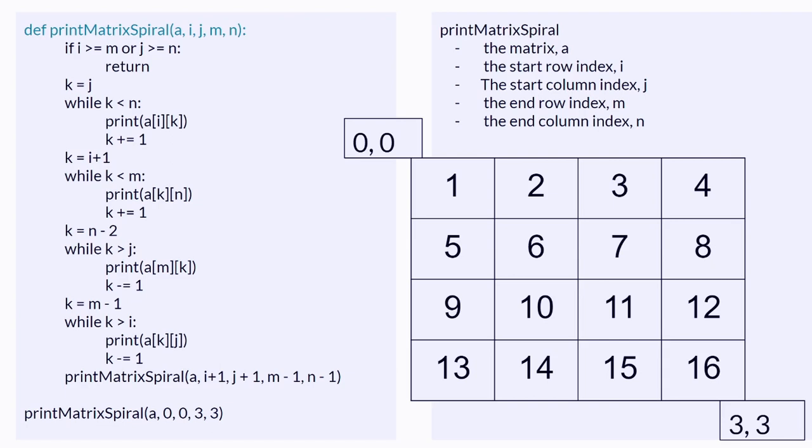The start row index, which is I. The start column index, which is J. The end row index, which is M. And the end column index, which is N.